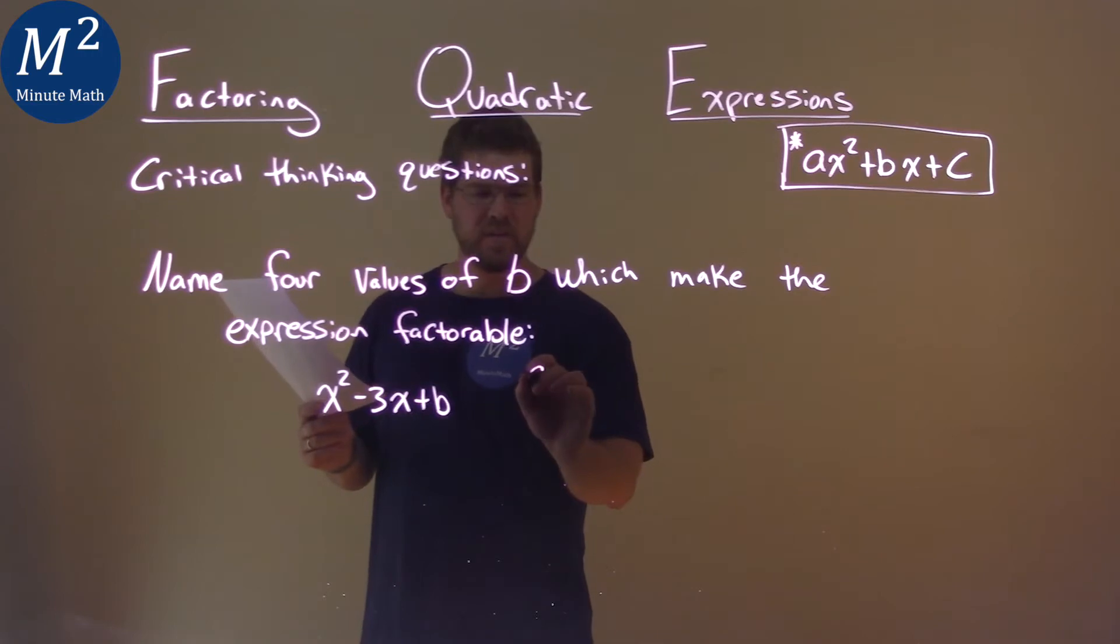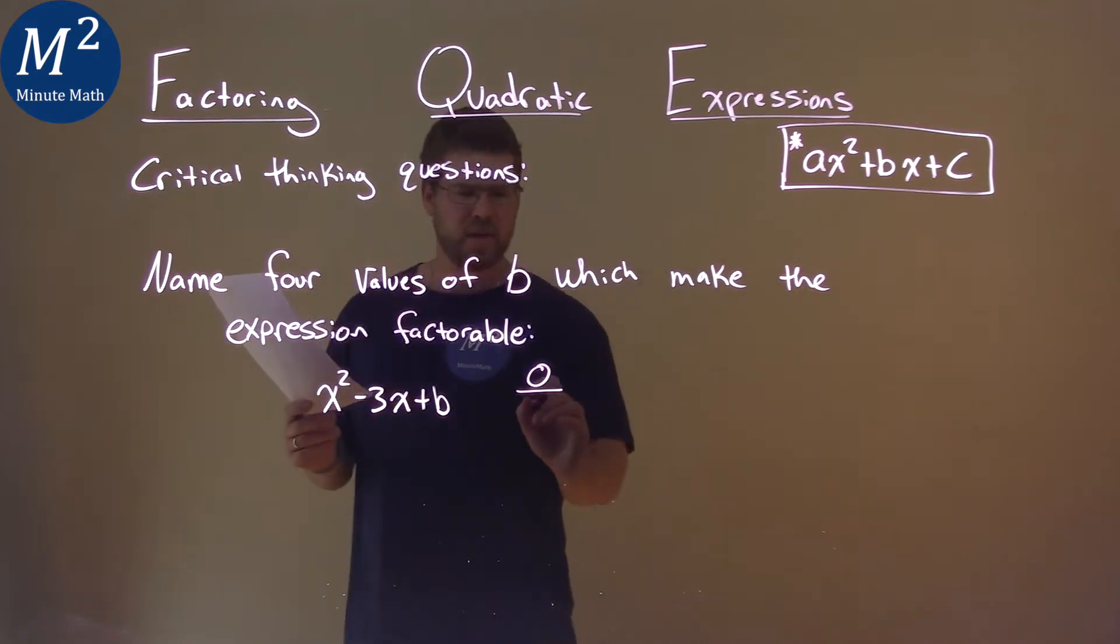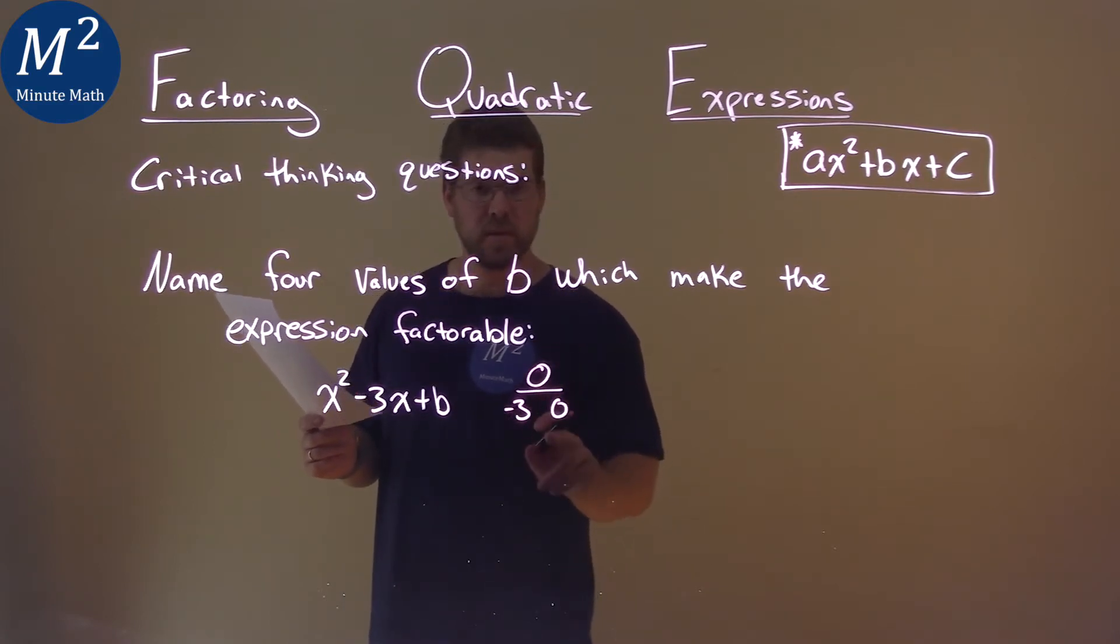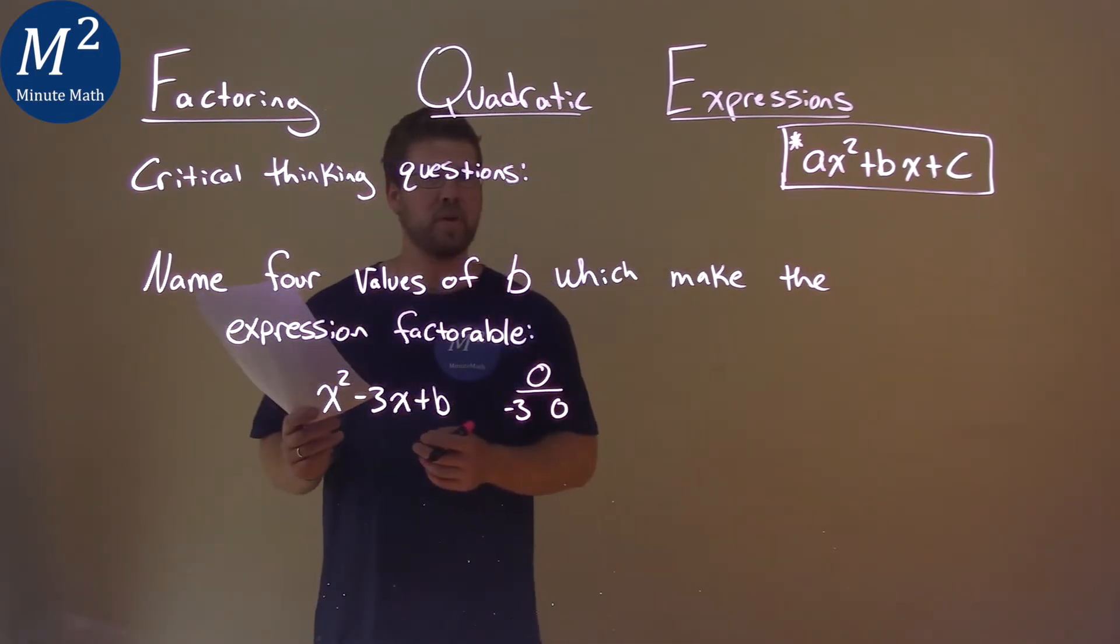What happens if b is 0? Well, what two numbers multiply to be 0? That could be negative 3 and 0. Negative 3 times 0 is 0, but that adds to negative 3. So that works here. So 0 works for a b value.